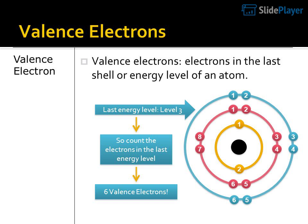For example: energy levels 1, 2, 2, 2 — last energy level is level 3. So count the electrons in the last energy level.